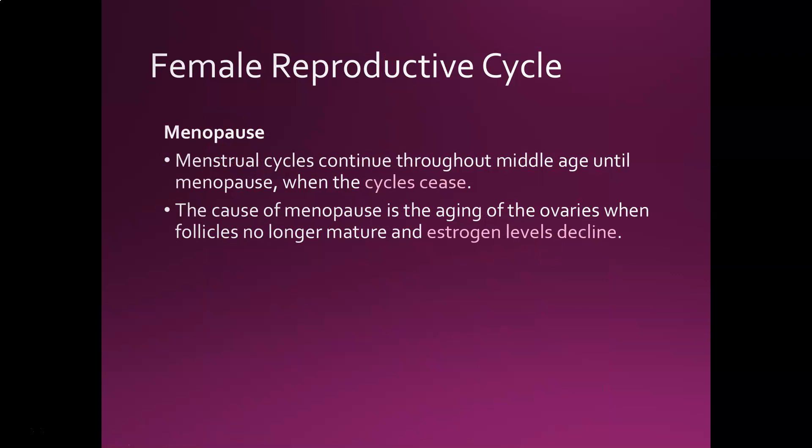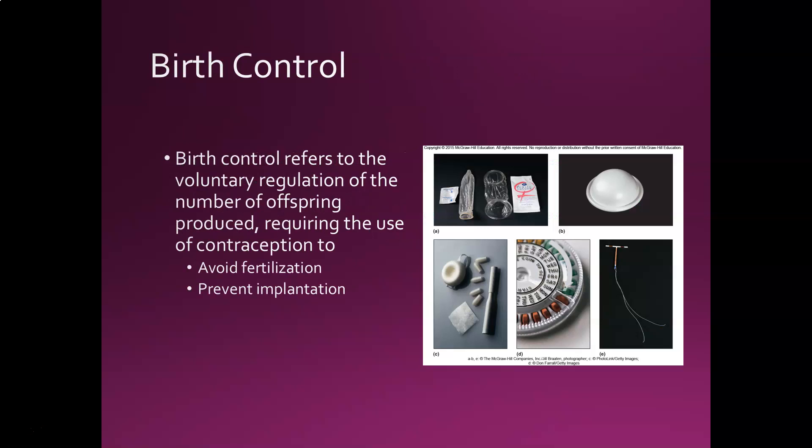It's worth mentioning menopause here. When your menstrual cycles stop, you enter menopause — you're no longer ovulating or having a period. Because you're no longer ovulating, estrogen levels start to decline. Some women will see their breasts shrink and experience other effects of not having estrogen around anymore.